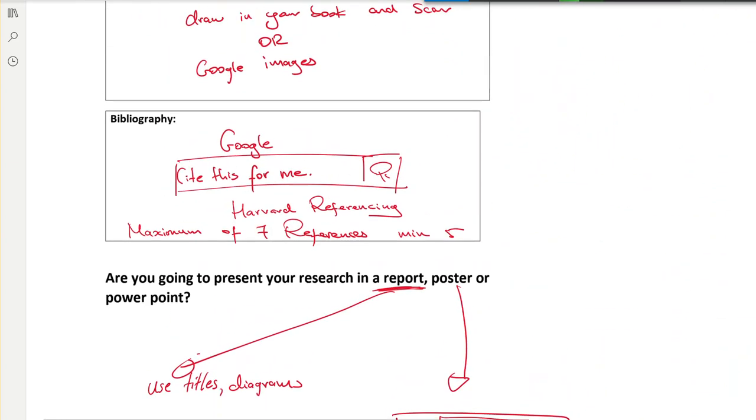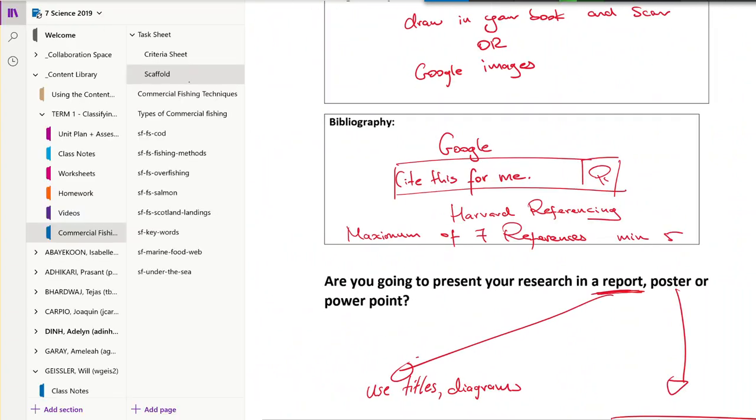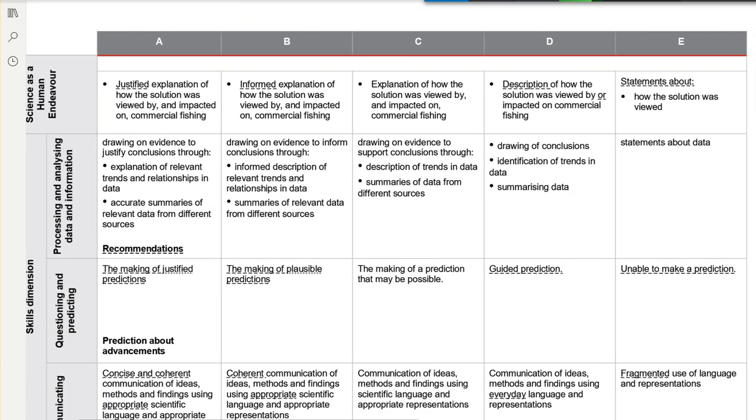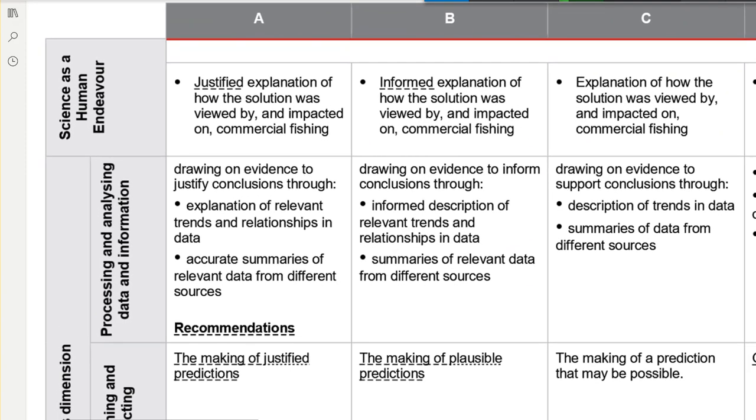And one last thing is the criteria sheet. So I just quickly want to have a look at this. So look here, this is really important. So the difference here between an A and a B, we'll forget about the C for now. Here it's informed, where this one is justified. So you have given a reason why you have said something. If you say that the fish, the fish are affected negatively, that's not justified. Justify why, do you know? Give many reasons, more than one maybe.